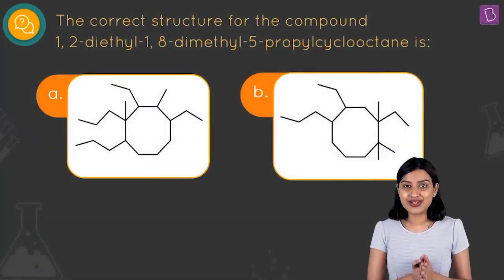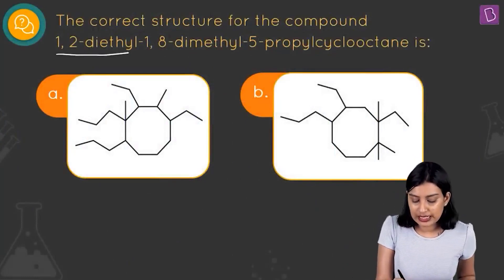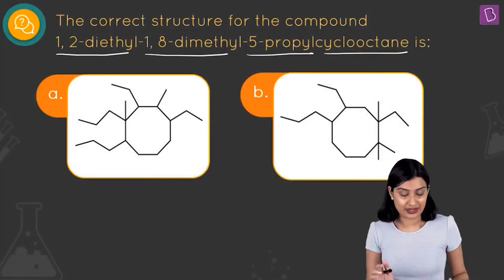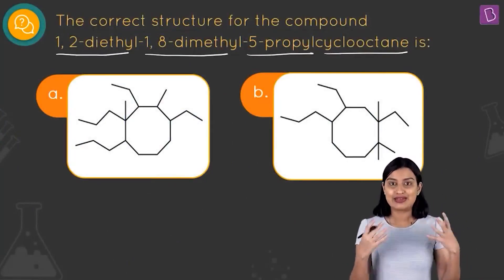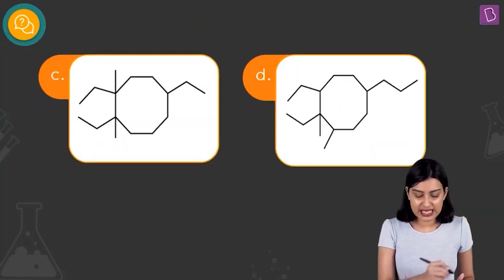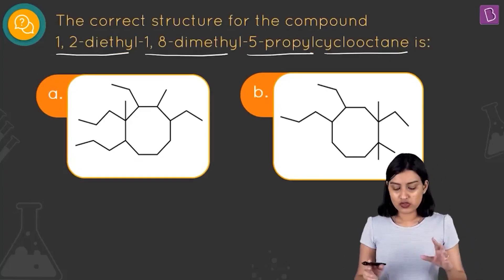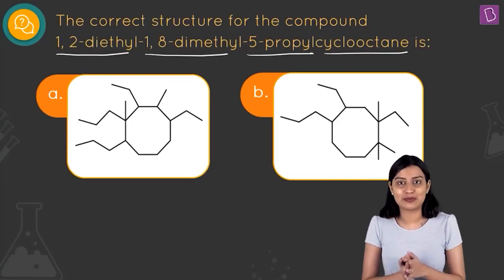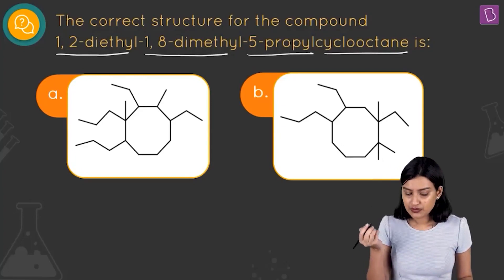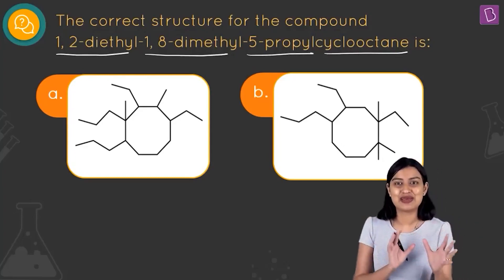Here they're asking for the correct structure for the compound 1,2-diethyl-1,8-dimethyl-5-propylcyclooctane. This is the IUPAC name of the compound and we need to pick which of options A, B, C, and D is going to be the right answer. Let's actually draw our own structure and then compare to see which option matches.